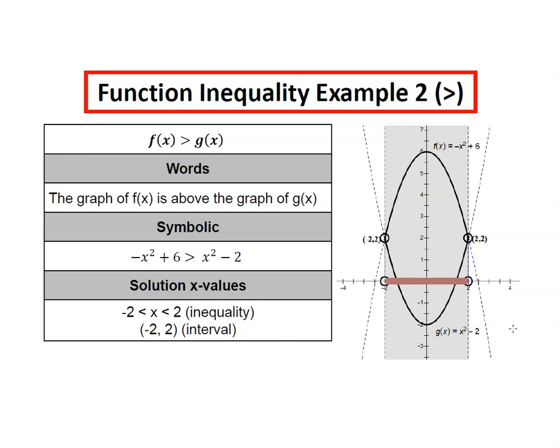Similarly, we can see where f is greater than g, and that's in between negative 2 and 2. So our inequality here is -2 < x < 2, and our interval is (-2, 2) without including the -2 and 2.